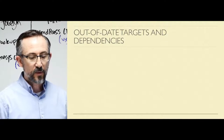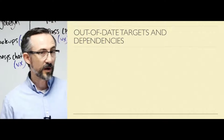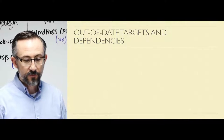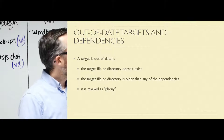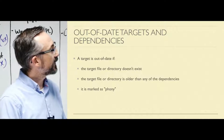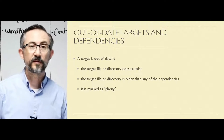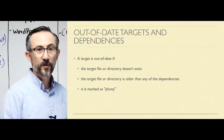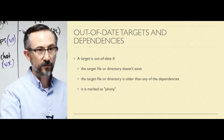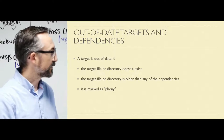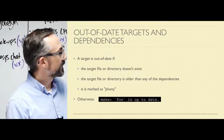The purpose of a rule is to tell Make when a target is out of date and what to do about it — how to fix it. A target is out of date if any of these conditions are true: the target file or directory does not exist yet; the file or directory is older than its dependencies; or the target is marked as phony. If any of those three conditions are true, the recipes will execute for that rule. Otherwise, you will see this friendly message: the target is up to date.